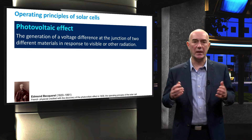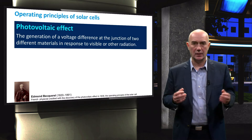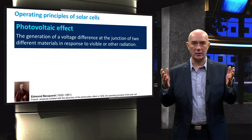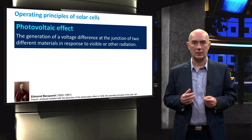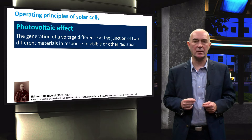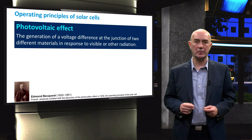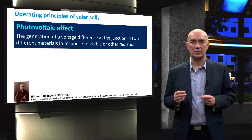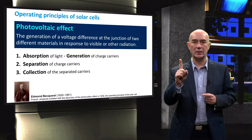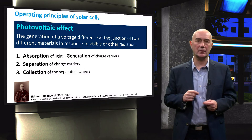Let's first review the basic operating principles of a solar cell. As already mentioned, the energy conversion in a solar cell is based on the photovoltaic effect. The photovoltaic effect is described as the generation of a voltage difference at the junction of two different materials in response to visible or other radiation. The first step in the energy conversion process is the absorption of light in the absorber layer of the solar cell.